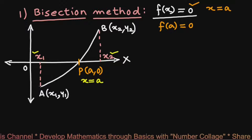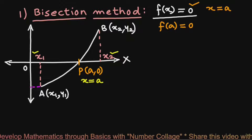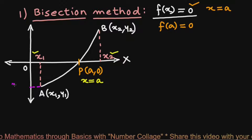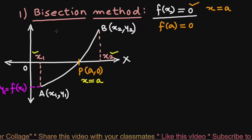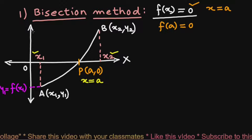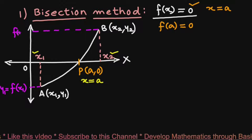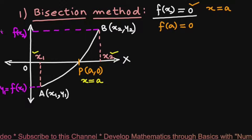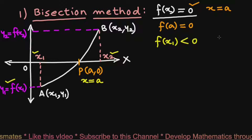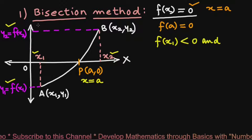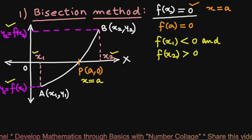A perpendicular from point A on the y-axis gives f(x1) = y1, and from point B gives f(x2) = y2. Here f(x1) is negative and f(x2) is positive. Now let us see how to solve algebraic equations by the bisection method.